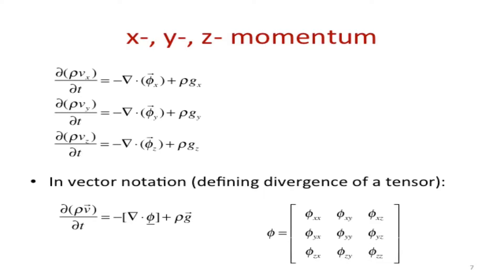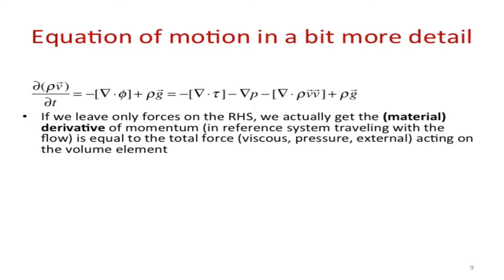So a tensor can be viewed as three vectors. Therefore, I can define divergence of a tensor as a vector that has coordinates that are divergence of each of these vectors. I can then write my equation as a vector equation: change of momentum density at a point is the divergence of this tensor plus rho-g. All of the complications come from actually writing what phi is.